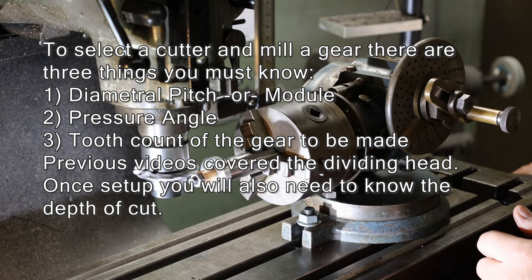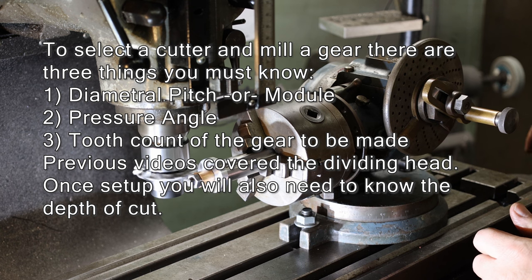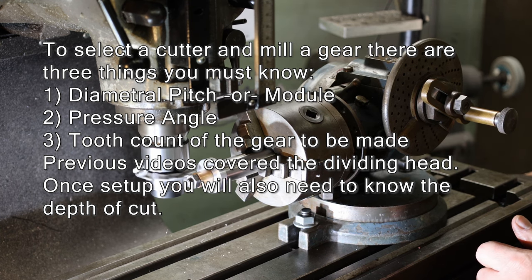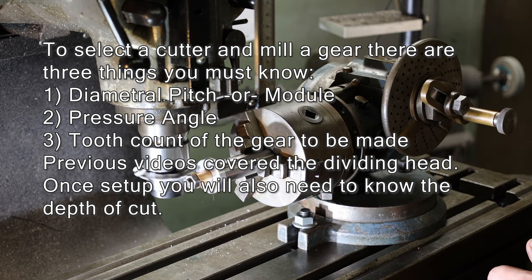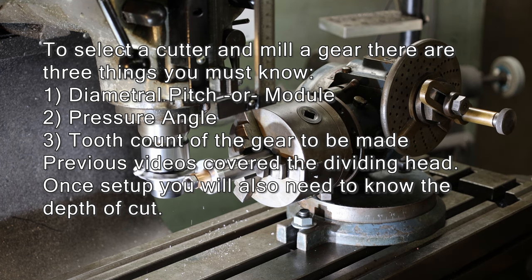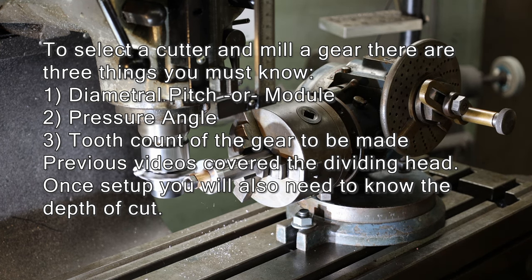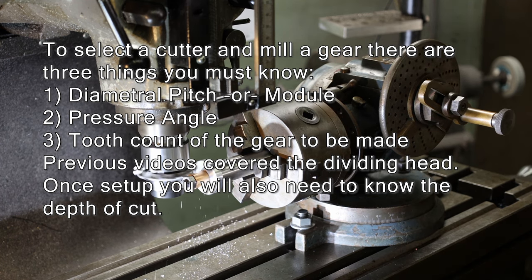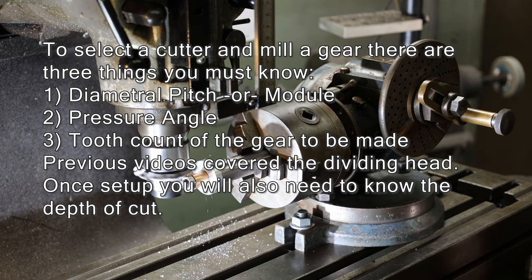To select a gear cutter to mill a gear, you need to know three things: diametral pitch or module, pressure angle, and tooth count. There's some more information you need once you get going, like your depth of cut, and we'll unpack that a little bit as we go forward.